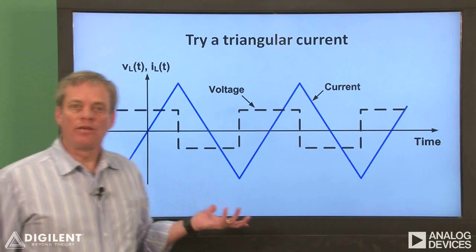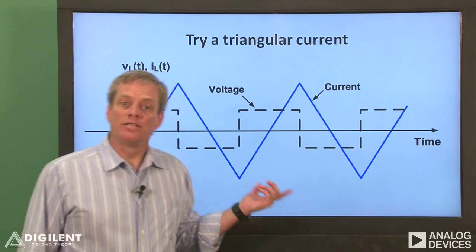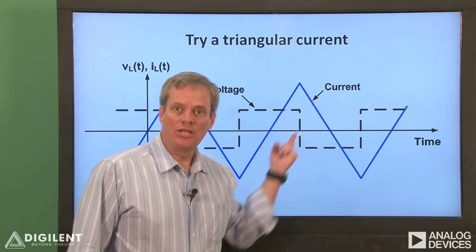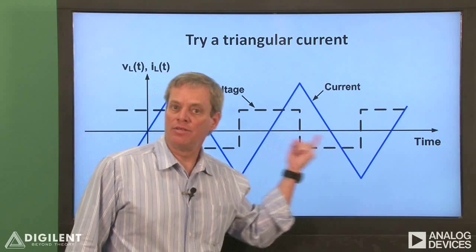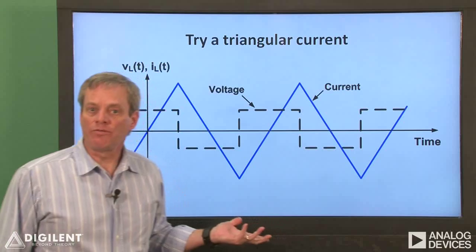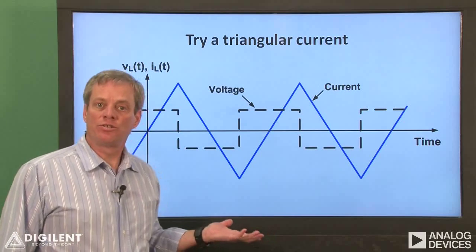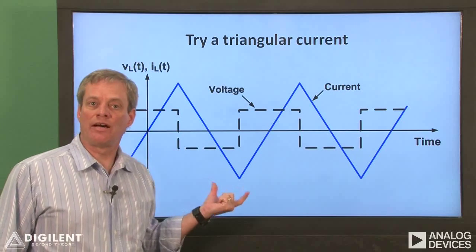Next, let's apply a triangular current waveform to the inductor. Since the slope or rate of change of the current is constant between the peaks, the voltage should be constant between the peaks. We'll use the circuit from before with the input changed to a triangular wave to see how this works out in actuality.